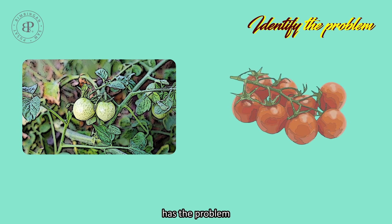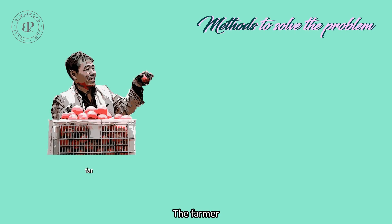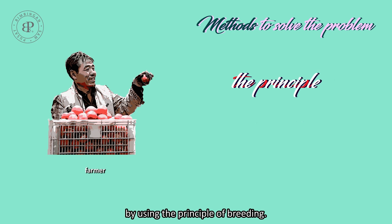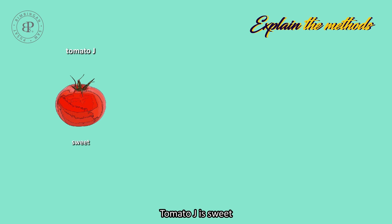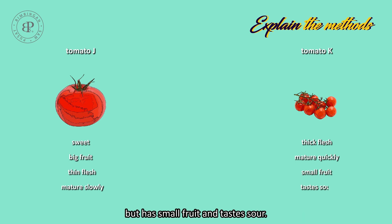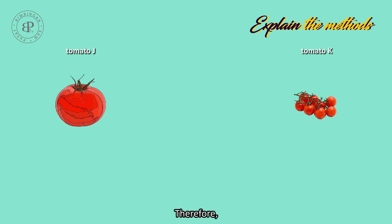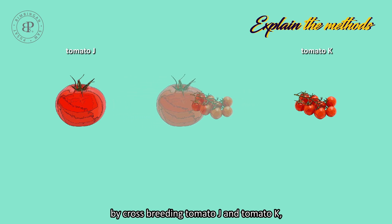The farmer has the problem of small fruit and small-sized tomatoes. The farmer can solve the problem by using the principle of breeding. Tomato J is sweet and has big fruit, but thin flesh and matures slowly, whereas tomato K has thick flesh and matures quickly, but has small fruit and tastes sour. Therefore, the farmer needs to carry out breeding by cross-breeding tomato J and tomato K.